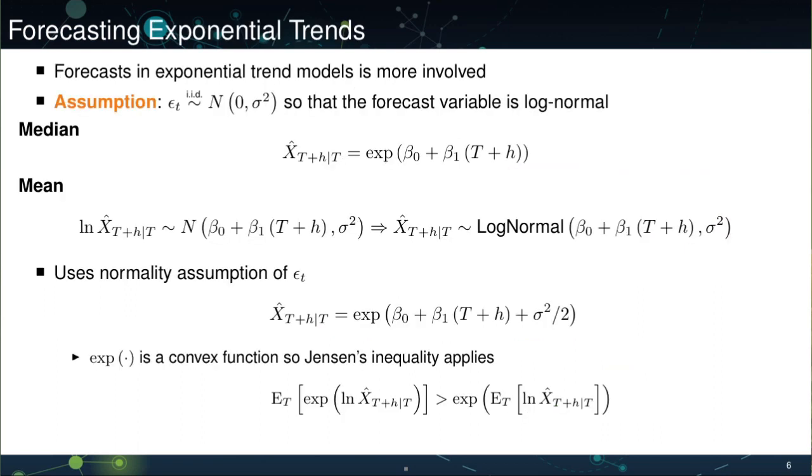When we have exponential trends, we need to make some additional assumptions, or at least make use of one essential assumption. The assumption we use, or consistently used, is to assume that the errors again are normally distributed, mean zero, invariant sigma squared. Once we have normal residuals of the model, we're going to have that the actual forecast variable itself, that is, xt plus h given t, is going to be log normally distributed.